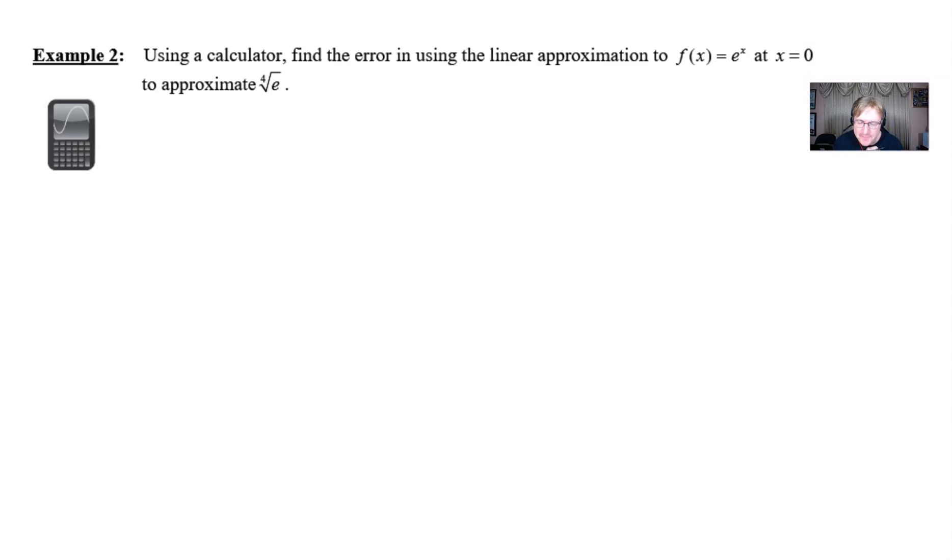As we can see with our example two, we're asked to use a calculator and find the error in using the linear approximation to f(x) = e^x at x = 0. And we're going to approximate something very unusual, the fourth root of e.